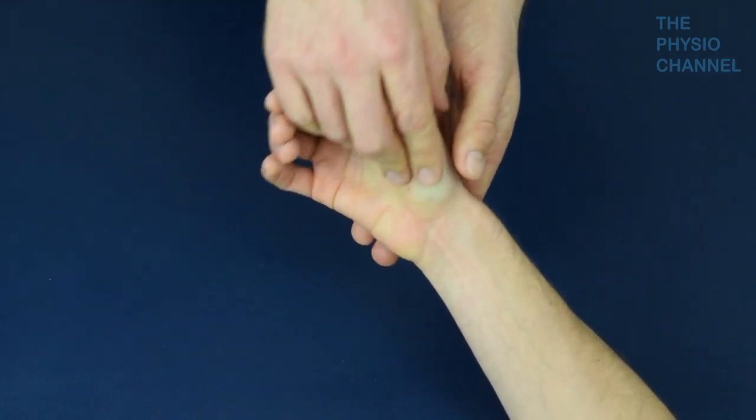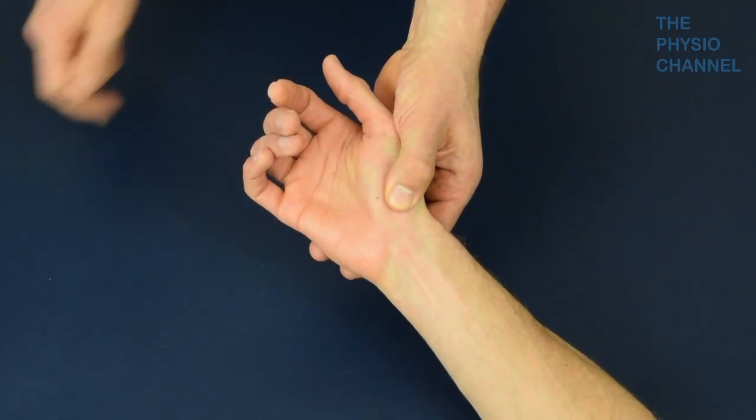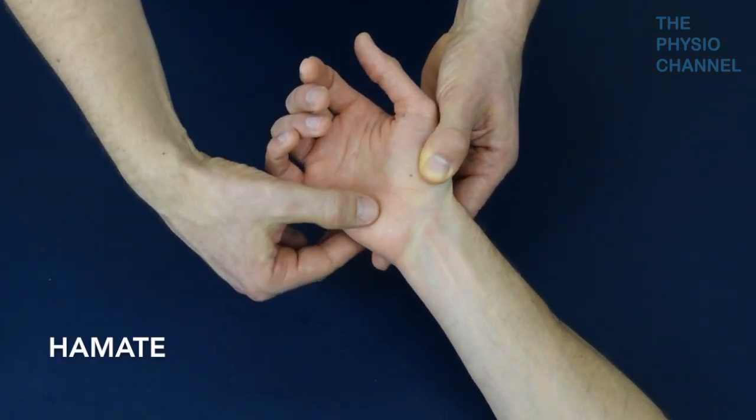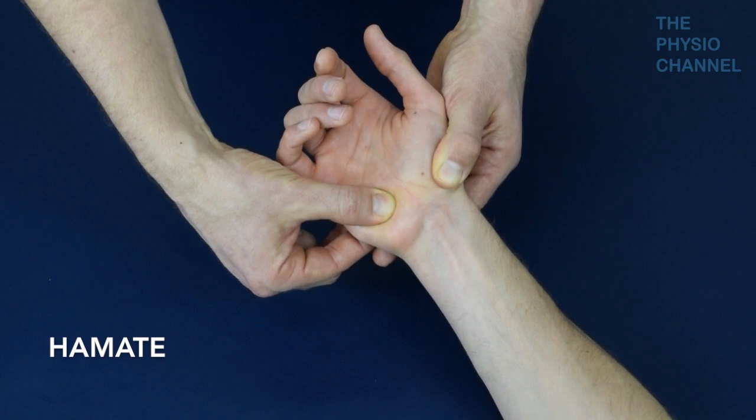Moving to the palmar side of the hand, the hamate is located in the hypothenar region with the hook of hamate being a palpatable nodule underneath the thickened palmar skin.